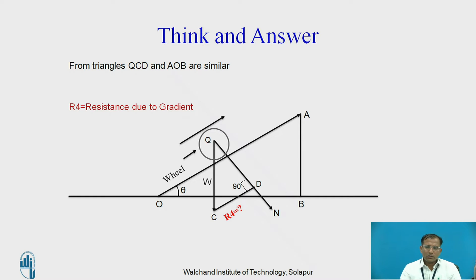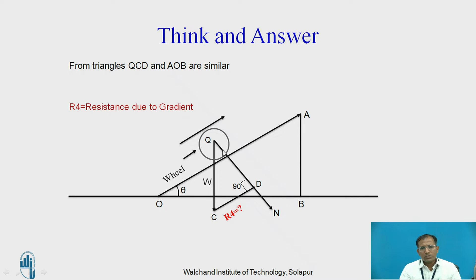Now, with understanding from the previous session, R4 is nothing but the resistance due to gradient. Using the law of similar triangles, we can see that a wheel is going in the upward direction having angle theta, which is the slope of that particular location or gradient. Taking from the CG of the wheel, there is a weight of the vehicle acting downward and a normal component N acting perpendicular to the plane of the rails.